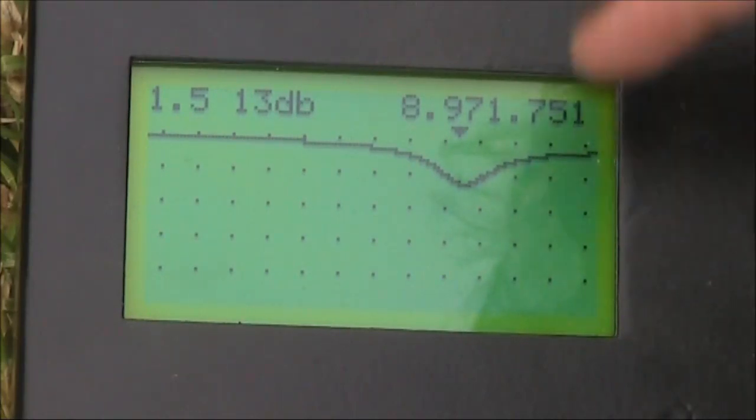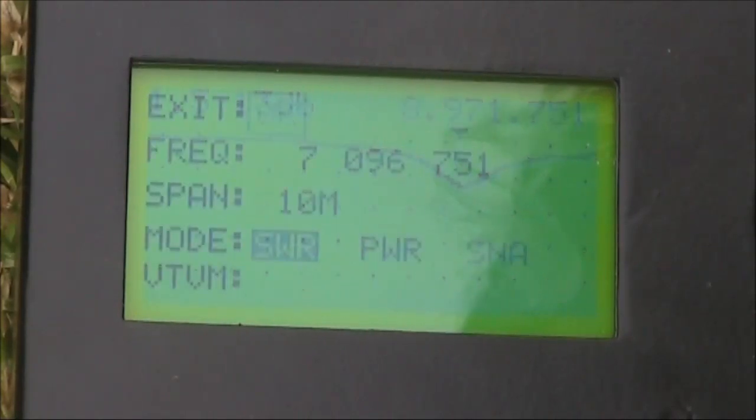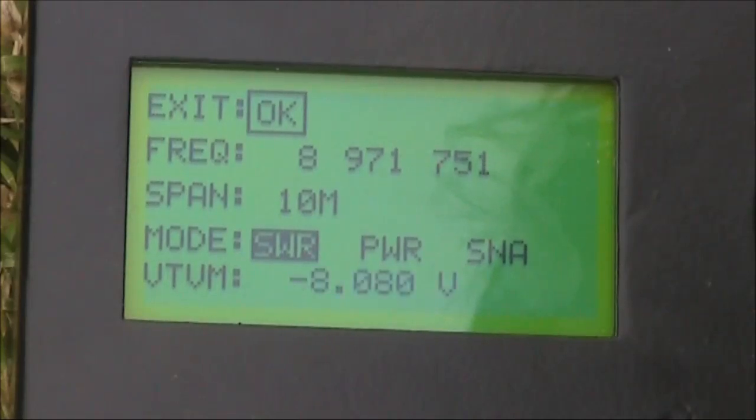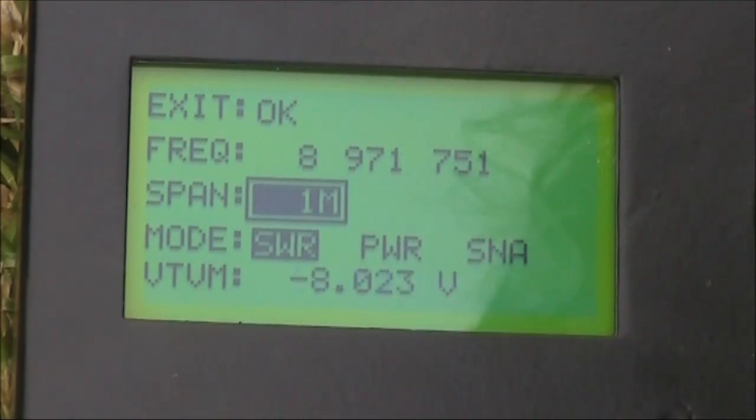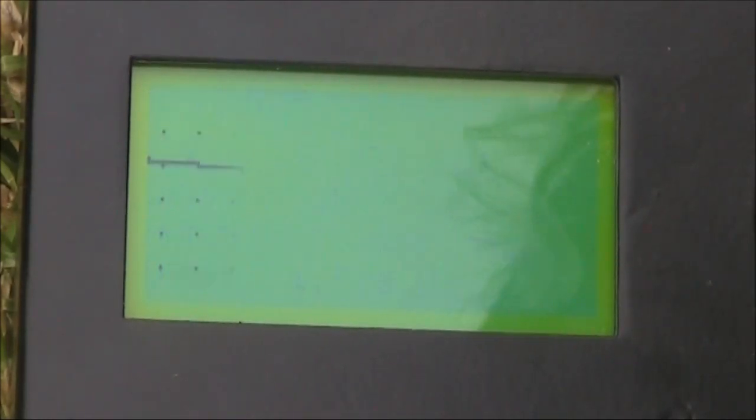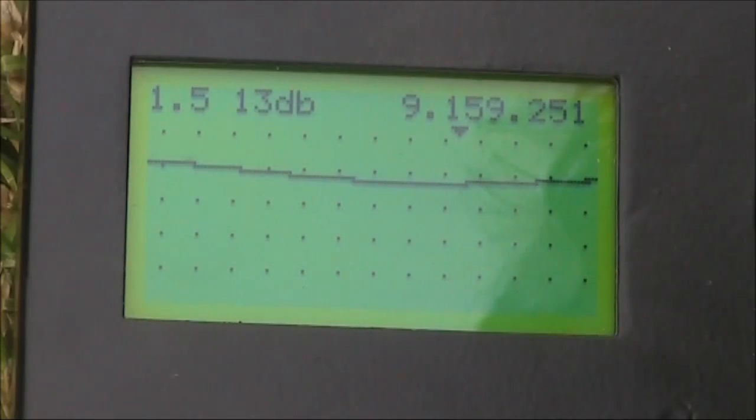What we can do is just hold the VFO button down, and you'll notice that the centre frequency changed to 8.971MHz. And we'll reduce the span to 1MHz and then press OK. And so we can see the dip is magnified.